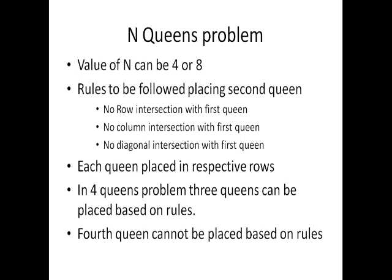In the N-Queens problem, the value of N can be 4 or 8. The rules to be followed when placing each queen are: after placing the first queen, the next queen must have no row intersection, no column intersection, and no diagonal intersection with the first queen.